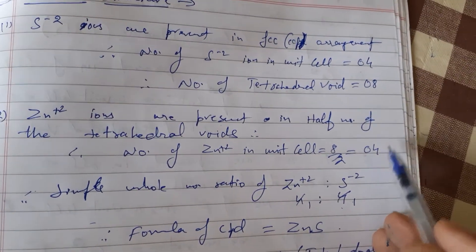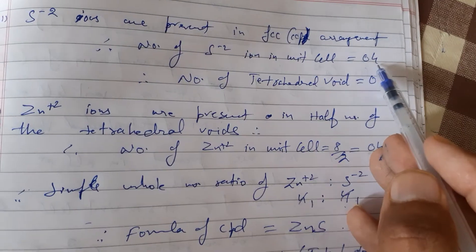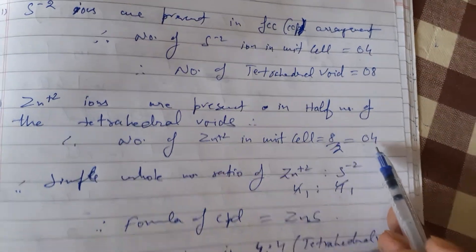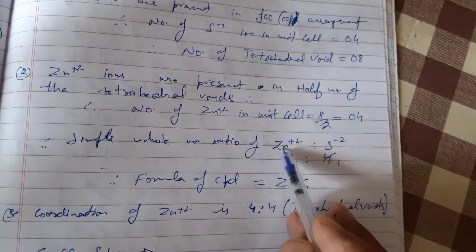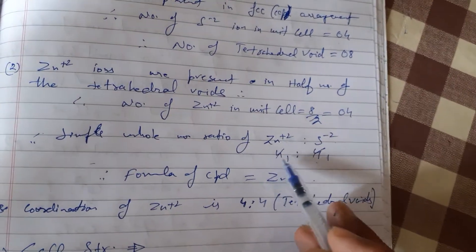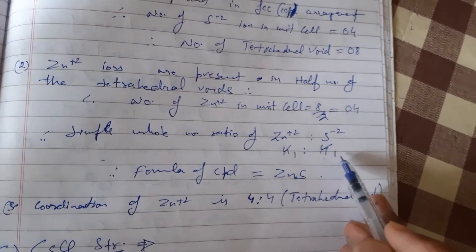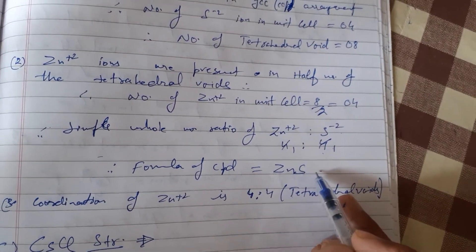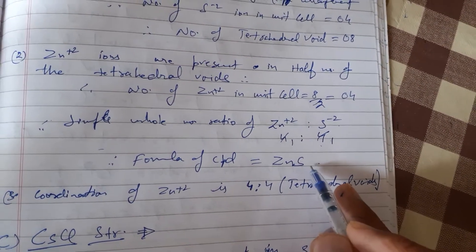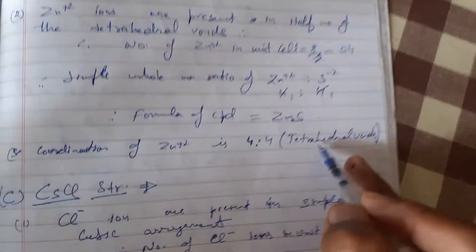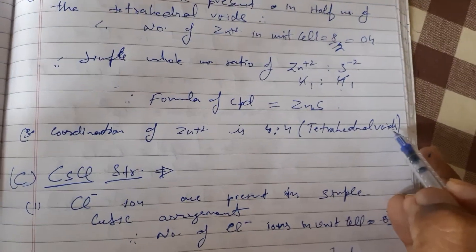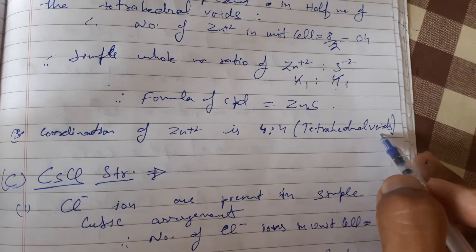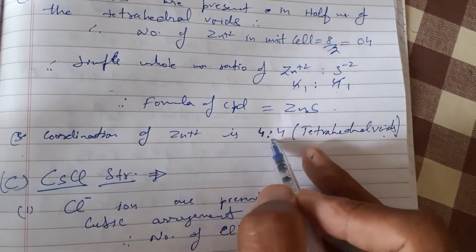The number of sulfide ions in the unit cell is four and the number of zinc ions is also four. Therefore the simple whole number ratio of zinc to sulfide ion is 4:4, which cancels to 1:1. The formula of the compound is ZnS. Since zinc ions are present in tetrahedral voids made by sulfide ions, the coordination number of zinc ion is 4:4.